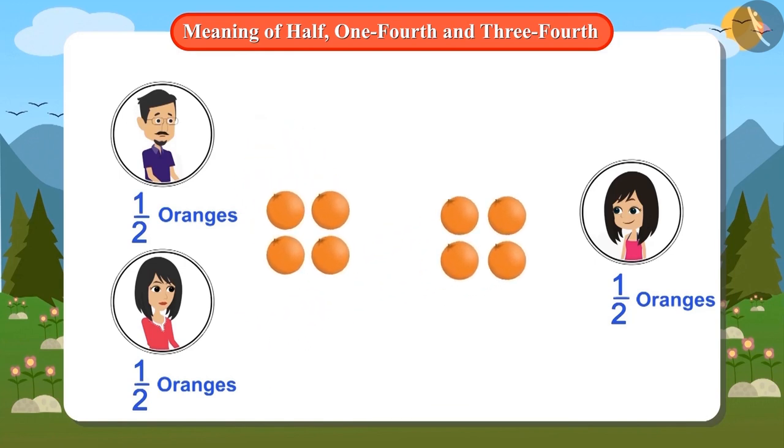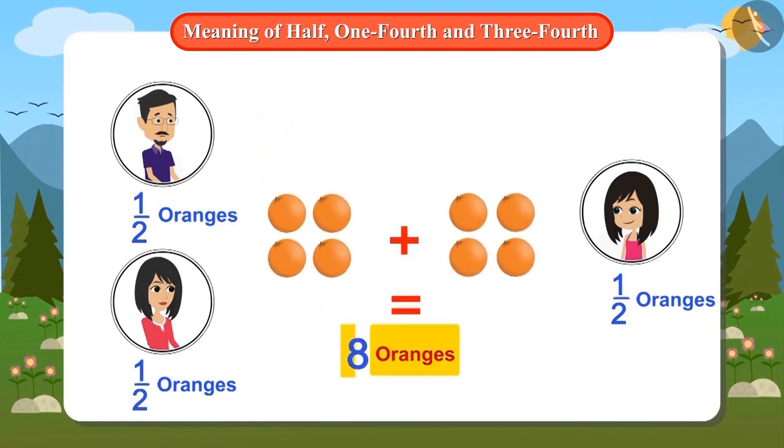Why did this happen? Adding half the number of oranges twice gives you the full number. So any shape or object can have at most two halves, so they can be divided between at most two people.